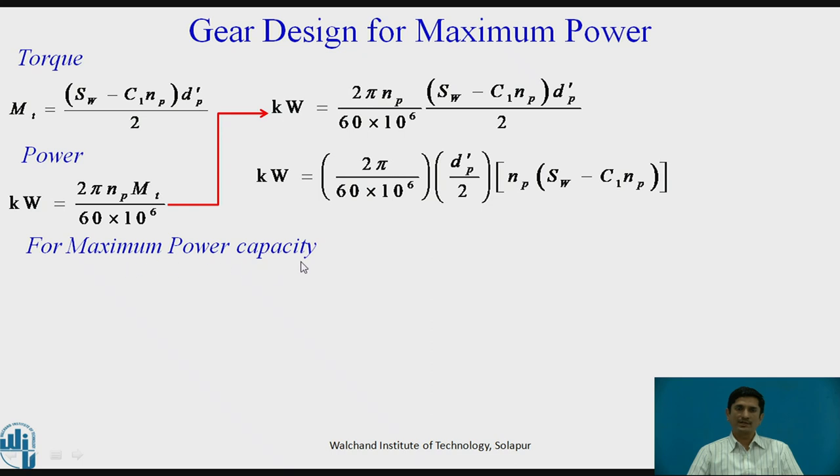The maximum power capacity I need to find out. I have the equation of power. I need to differentiate this equation. If I differentiate and equate this equation to 0, I can get the condition for maximum power transmission. The equation is differentiated and equated to 0. So, SW minus C1 2 NP equals 0.